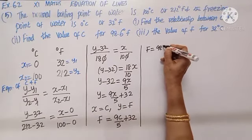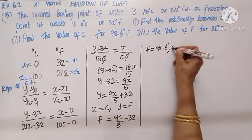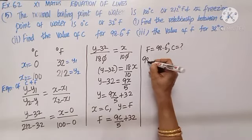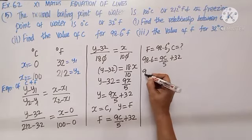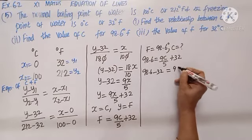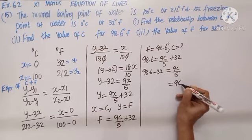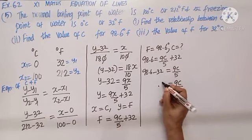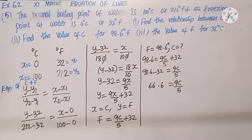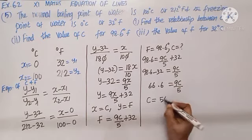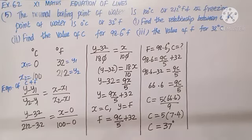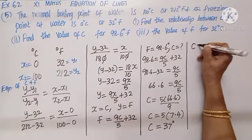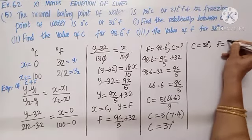Proceeding to the second part: given F equals 98.6, find C. Substituting: 98.6 equals 9C over 5 plus 32, so 9C over 5 equals 66.6, giving C equals 5 times 66.6 divided by 9, which simplifies to C equals 37 degrees. Third part: given C equals 38, F equals 9 times 38 over 5 plus 32.